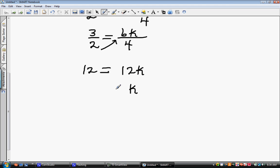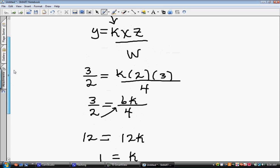Now we have to go up and see what our original equation was. Our original equation was y equals kxz divided by w. Now since k is 1, all they're asking us to do is find the equation of variation. So we're going to put y equals 1, or remember if it's 1 you don't actually have to put it. This is the equation of variation.